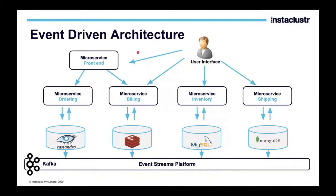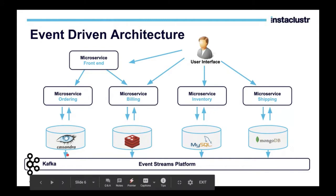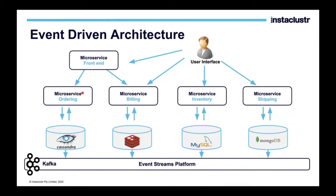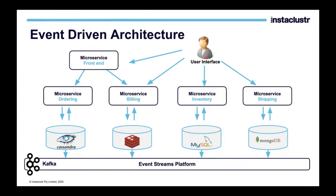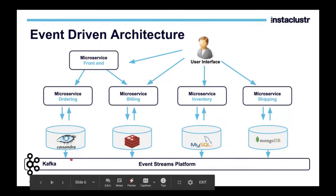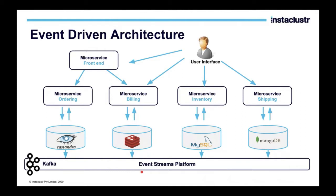Event-driven architecture is one more step going ahead of the microservices architecture. In microservices architecture, when a specific event occurs, it triggers a lot of functionality. For example, in an ordering system, there are microservices for ordering, billing, inventory, and shipping — each handled by their own data stores. The user interface interacts with each microservice independently, and any event triggered from the user interface will create some processes to run. This is where Kafka comes into picture, because if we have a lot of microservices, they need to talk with each other and there is a lot of data exchange. Kafka exactly caters that requirement.